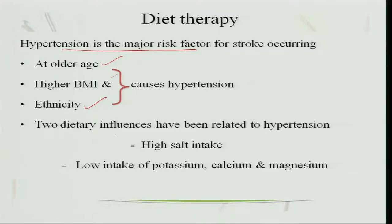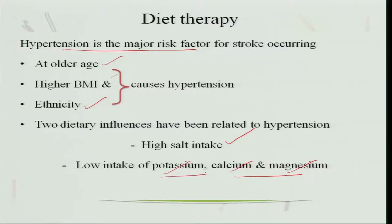There are two dietary influences related to hypertension. One is high salt intake, and the other is low intake of potassium, calcium and magnesium. Calcium and magnesium are important for maintaining the rhythm of the heart, so when these are low in the body they will cause hypertension.